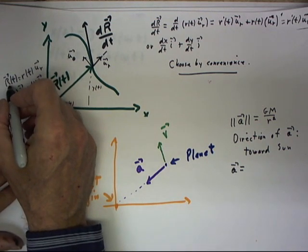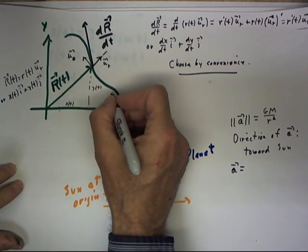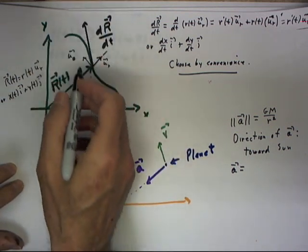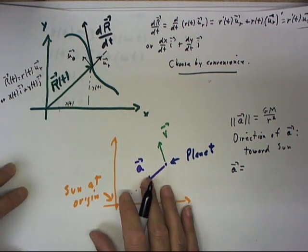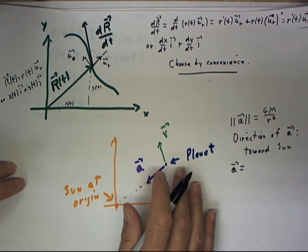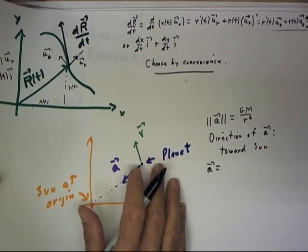Our r of t function, whatever that function is, traces out this curve as a function of the parameter t, can be expressed in either of two ways. And which way we use is usually determined by convenience of the situation.